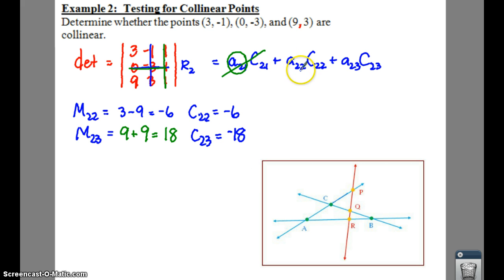So let's go ahead and plug these values in. For A sub two, two, we have negative three. We're going to multiply that by your cofactor. Over here we have A sub two, three, which is one, and we're going to multiply that by your cofactor. So you have negative six here, we have a negative 18 over here. So that gives us negative three times negative six plus one times negative 18, which is 18 minus 18, which is zero. And since we get a zero here, that means that the points are collinear.